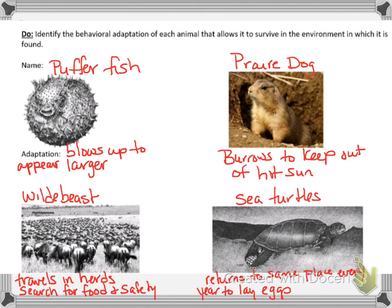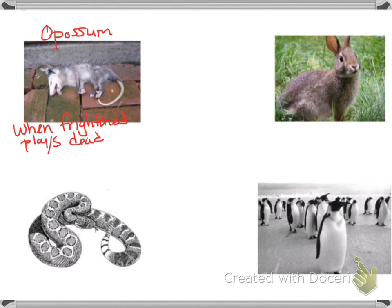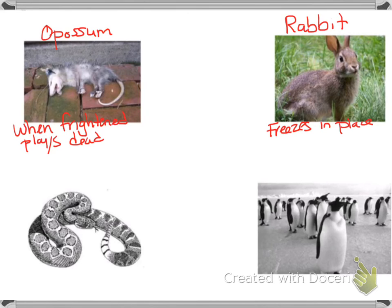We have the opossum — when it's frightened, it plays dead. If you've ever heard the expression 'don't play opossum,' that's what we're talking about. Next, there's the rabbit, which will freeze in place and just won't move, because it thinks if you don't see it move, you won't see it.